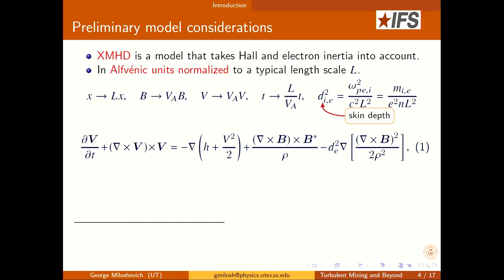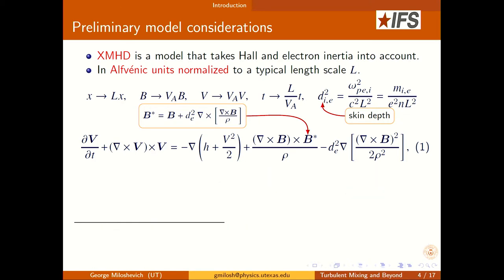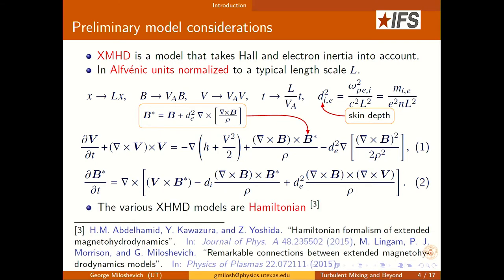There is an ion skin depth and an electron skin depth that are proportional to the corresponding masses, so if you ignore electron mass you are ignoring the electron skin depth. This is essentially Newton's law for the bulk velocity. If you ignore the electron skin depth DE, you recover regular MHD. Notice the star quantity is defined here — it also depends on DE. You also need Faraday's law, and again if you ignore the DE and DI terms you recover regular MHD, but this system fully describes a two-fluid plasma.